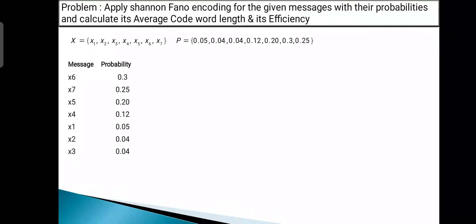Continuing the arrangement: X5 with probability 0.20, followed by X4 with 0.12, X1 with 0.05. Now consider messages X2 and X3 — they have the same probability of 0.04, so we can place X2 followed by X3 or X3 followed by X2; both are correct. This shows that Shannon-Fano code is not a unique code. Here I have placed X2 followed by X3, each with probability 0.04.